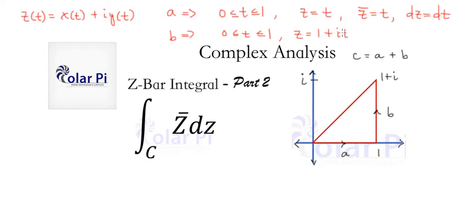And then that would mean z bar is 1 minus it, and then dz is equal to idt. Since this is z, dz will be idt.